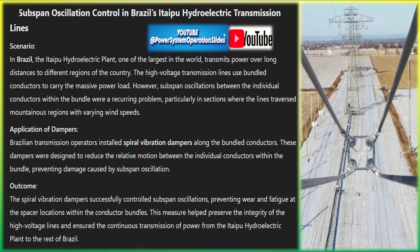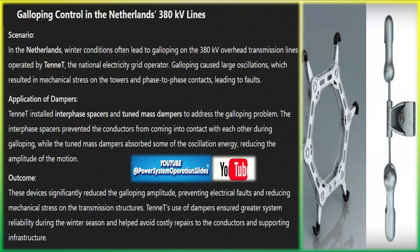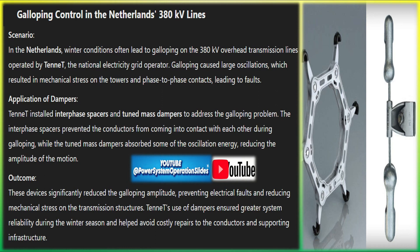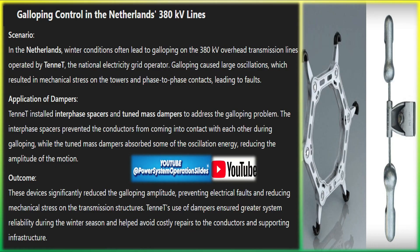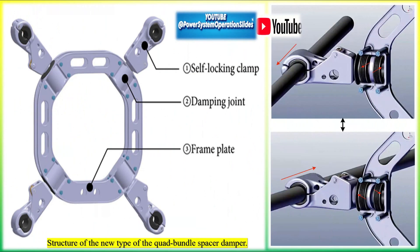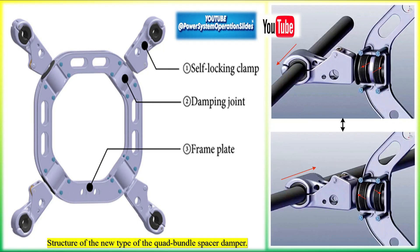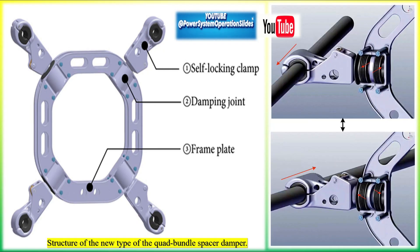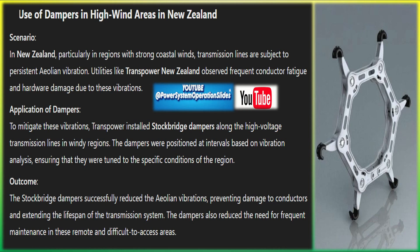While dampers provide significant benefits, their proper installation and tuning are crucial for optimal performance. Dampers need to be strategically placed along the span, typically near suspension points or areas where vibrations are most intense — improper placement can reduce their effectiveness. Different span lengths and line tensions require dampers tuned to specific vibration frequencies; Stockbridge dampers, for example, are designed for specific ranges of vibration frequencies. Environmental factors such as wind speed, temperature, and the presence of ice all affect the type and severity of vibration, so understanding local conditions is key to selecting the right damper.